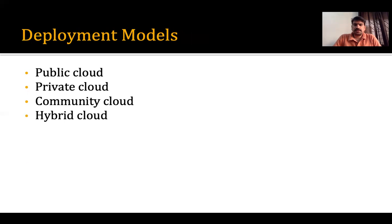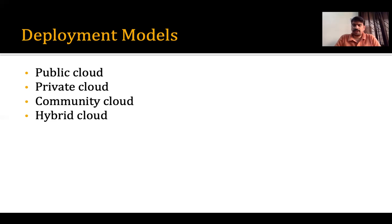Let's look at the deployment models related to cloud computing. When we want to create a cloud infrastructure, there are different models we can use. The first model is called public cloud, then we have private cloud, community cloud, and hybrid cloud. The whole cloud is divided into four categories of deployment, and the meaning of deployment is to create the cloud infrastructure.